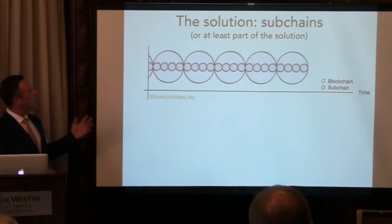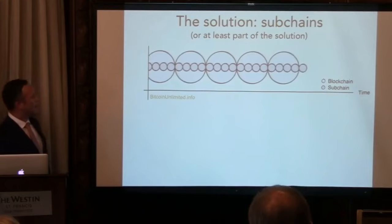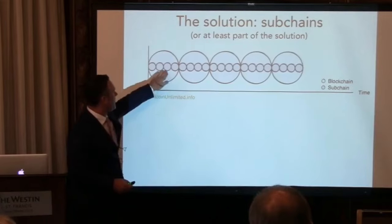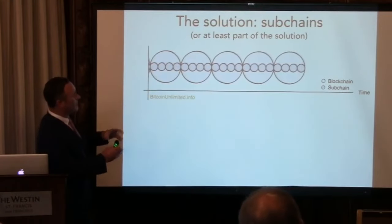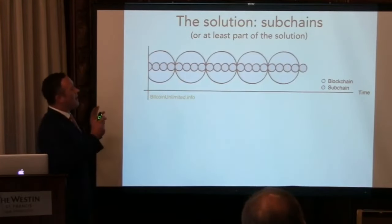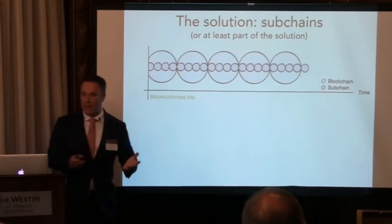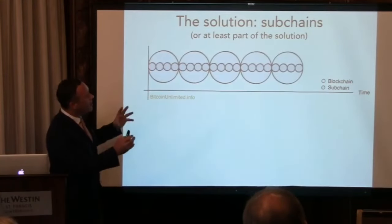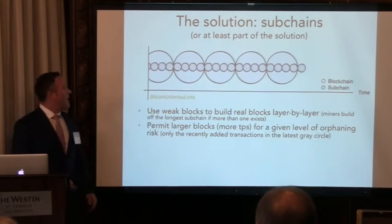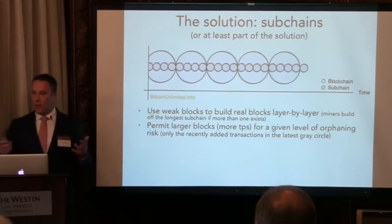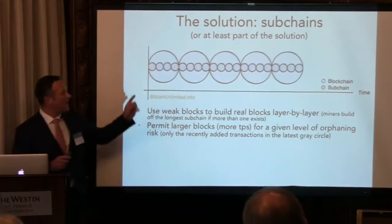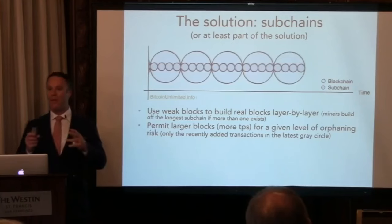The idea behind subchains is illustrated in this diagram. The purple disks represent the blockchain — we see new blocks being appended. That happens every 10 minutes in reality, so it's obviously sped up. But these smaller disks are weak blocks. The strong blocks are being built layer by layer by these weak blocks. Subchains permit larger blocks — more transactions per second for a given level of orphanage risk — because only the most recently added transactions in that last gray circle need to be propagated at the moment the block is propagated.